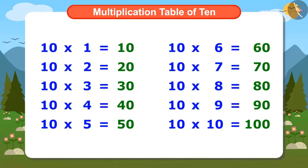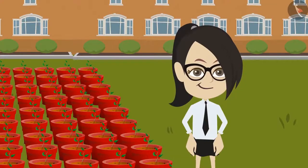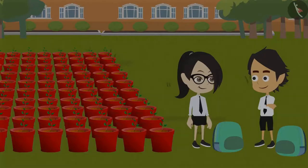Ayushman had written down the entire Multiplication Table of 10. Have you written the same thing? Vandana knows another easy way to find the Multiplication Table of 10, and she is telling Ayushman about it.